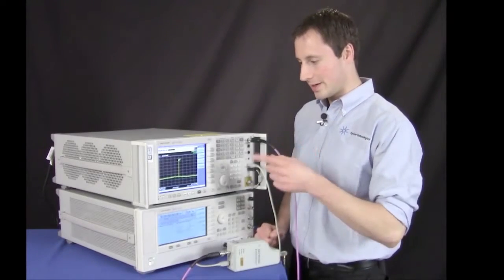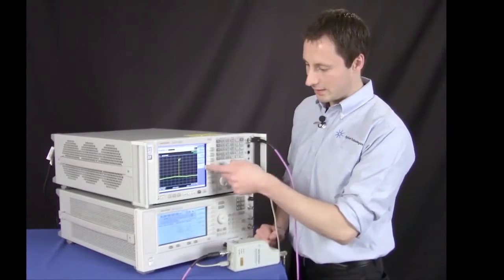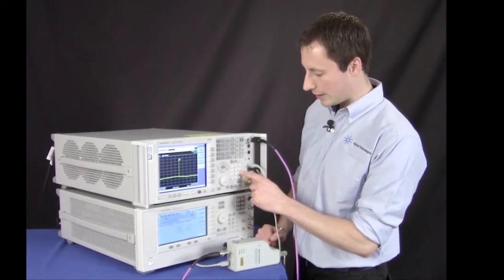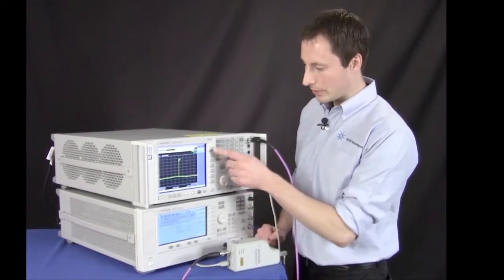We do have a way to do this and we have to enter it manually. So we go into external mixing to cable IF loss and we enter the extra 3dB of attenuation that we put in.